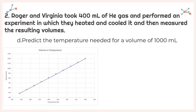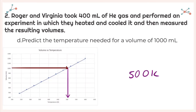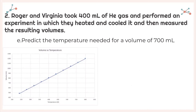It says predict the temperature needed for a volume of 1,000 milliliters. Let's see where 1,000 milliliters is — it's about there. Let's see where that corresponds to on my temperature — it's about 500. So the temperature needed is about 500 degrees Kelvin. Next, it asks predict the temperature needed for a volume of 700 milliliters. Let's see where 700 is — it's about there. That corresponds to about 350 on my temperature. So I'm going to say the temperature is going to be 350 degrees Kelvin.